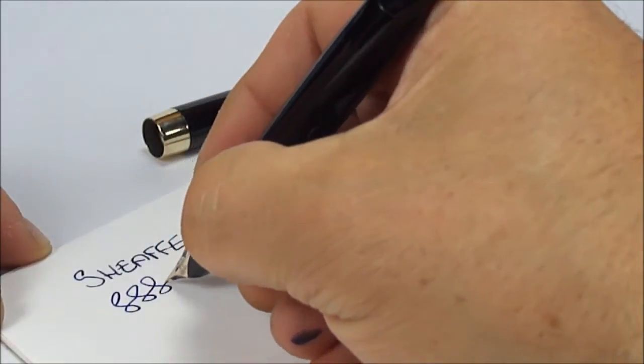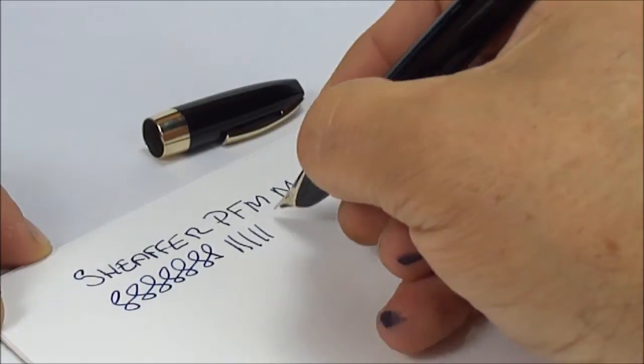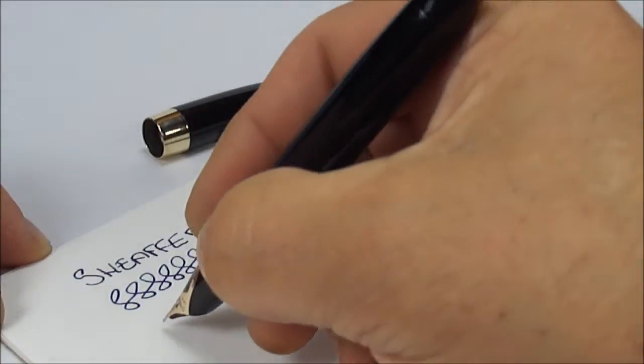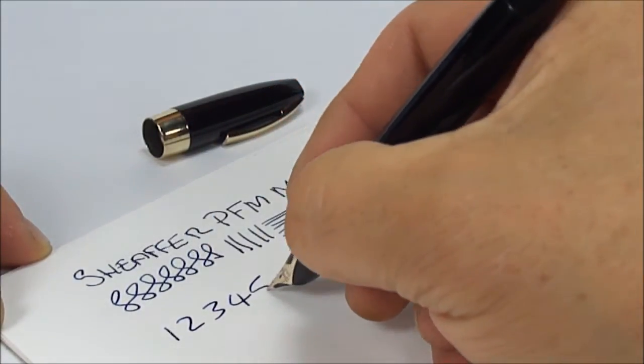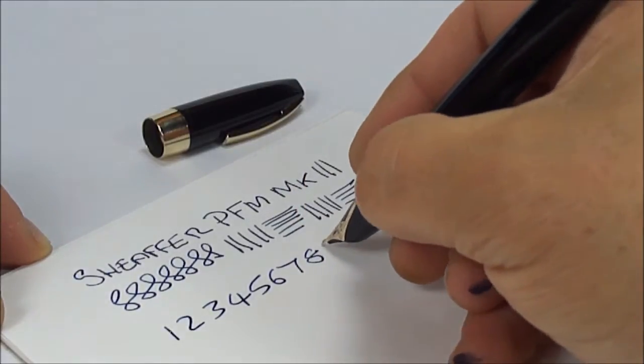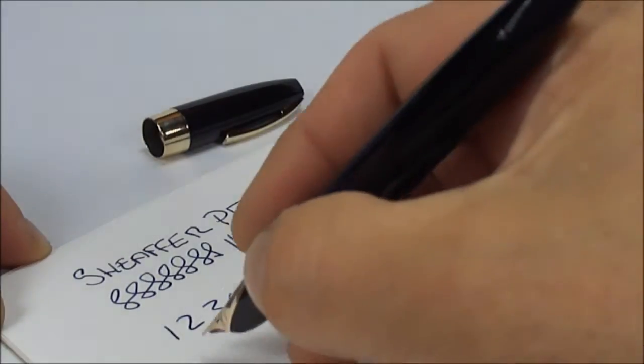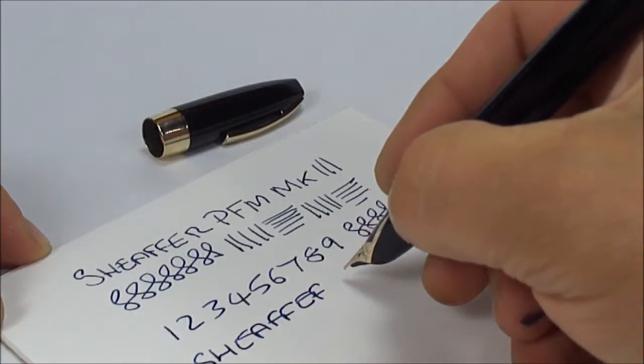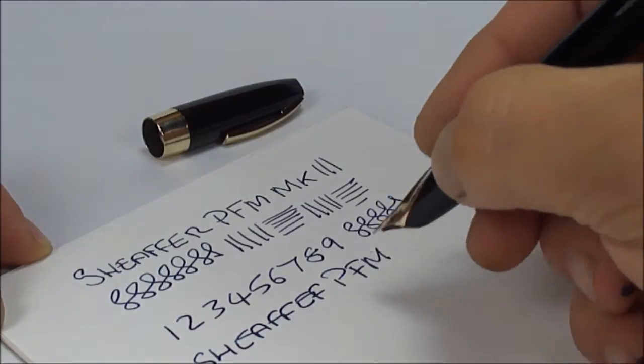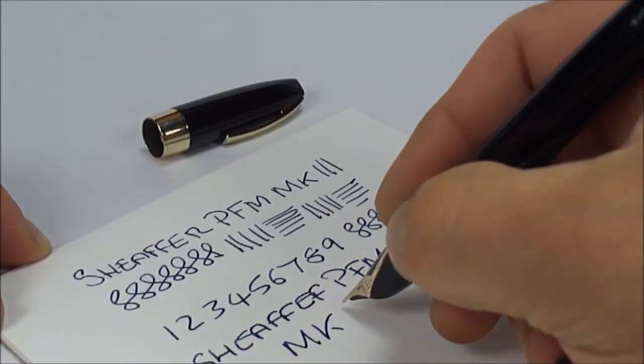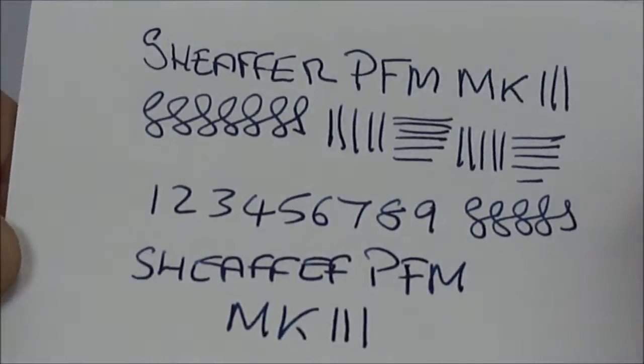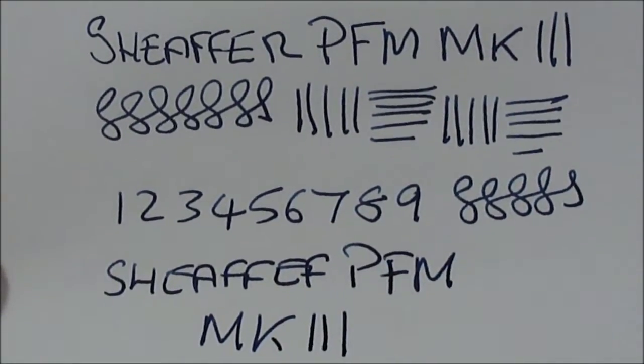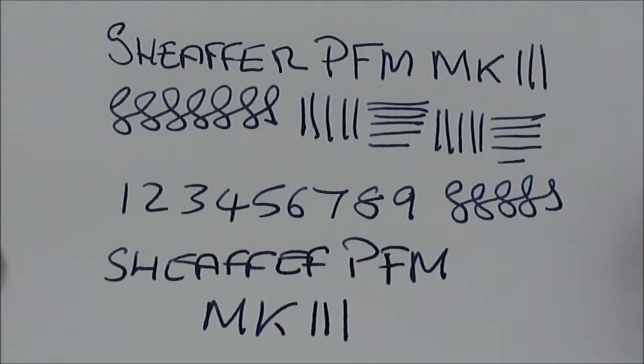As you can see it's actually writing with a, I would say a fine line. Lovely and smooth. Absolutely lovely writer. And it actually laying down a nice, well I wouldn't say wet but a lovely, lovely line. There we have it. The Schaefer PFM and as we said before this particular one is the Mark III model. There you have a writing sample. Lovely, lovely writer. Nice and smooth. With a fine line.